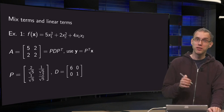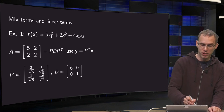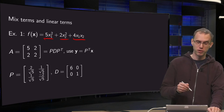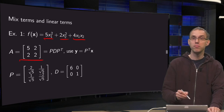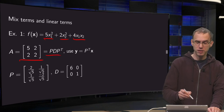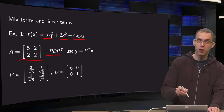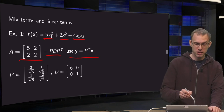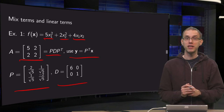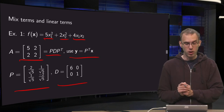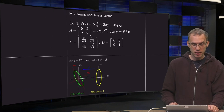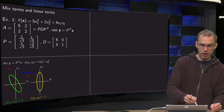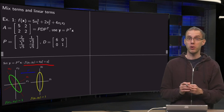Let's start with the elimination of the mixed terms. We have a quadratic form with a mixed term and we know how to eliminate it. First we find the associated matrix. So if A equals P times D times P transpose, we use as usual Y equals P transpose times X, where P and D are the matrices that give an orthogonal diagonalization of A.